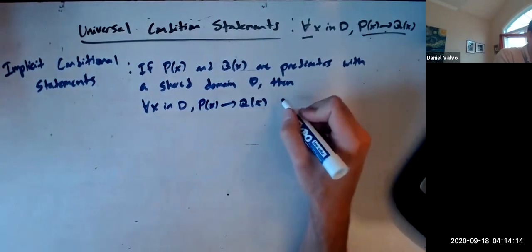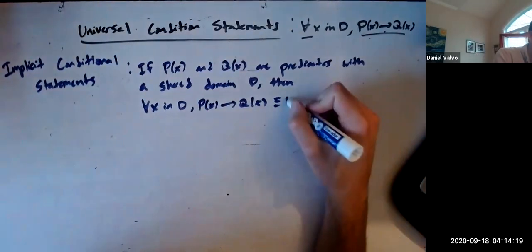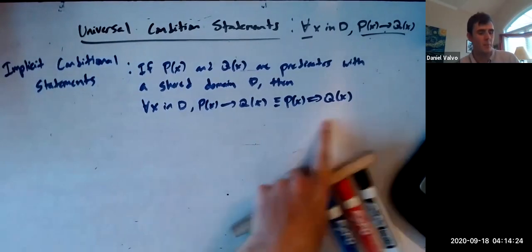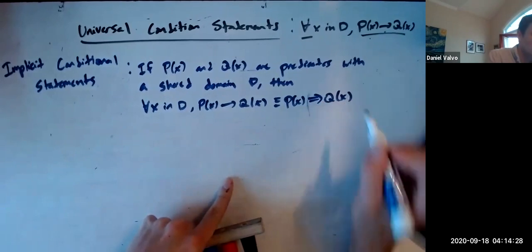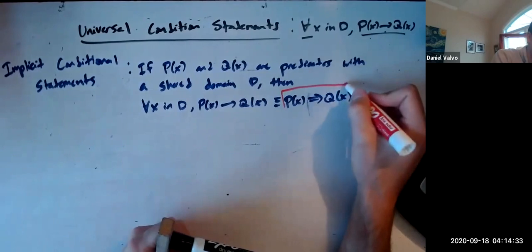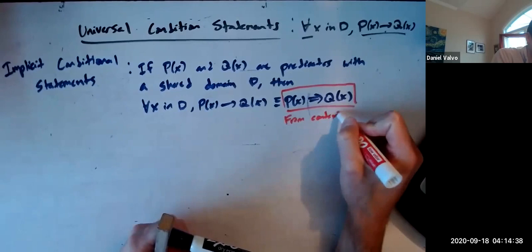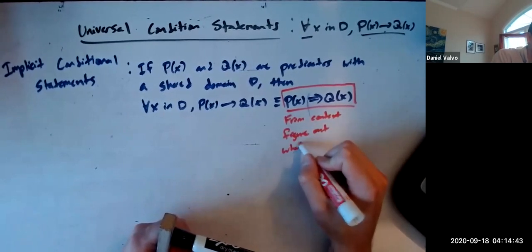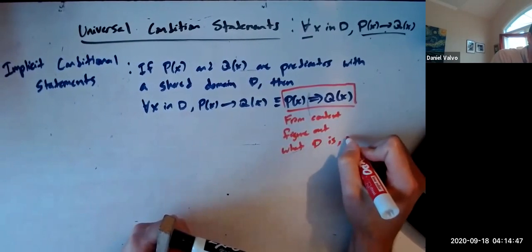We can write it in a slightly condensed notation, just say P of X implies Q of X, just like that. So the point is, if you see this statement right here, first of all from context, figure out what the domain is, and then you go.